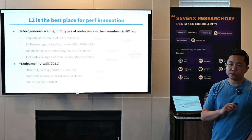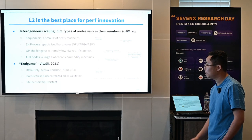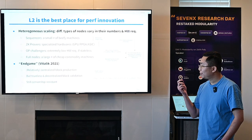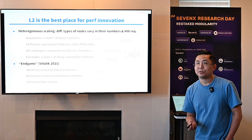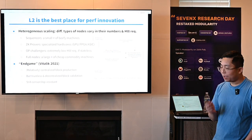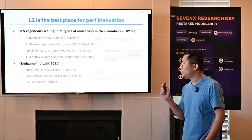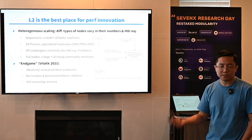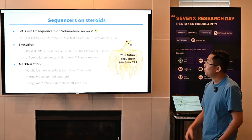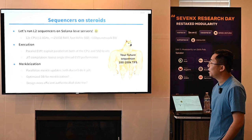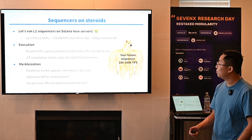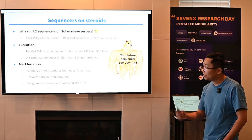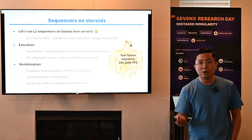This idea of heterogeneous scaling was introduced a long time ago. Vitalik's Endgame post back in 2021 argued that if you want high-performance blockchain, you'll inevitably end up with a relatively centralized sequencer design — but it's acceptable if you can achieve trustless and decentralized block validation and still have anti-censorship protection mechanisms in place. So let's run L2 sequencers on Solana-level servers: a dozen CPU cores, at least 256 gigabytes of memory, fast NVMe SSDs, and over 100 gigabits per second network bandwidth. We run those on beefy machines and apply all the software tricks we know.